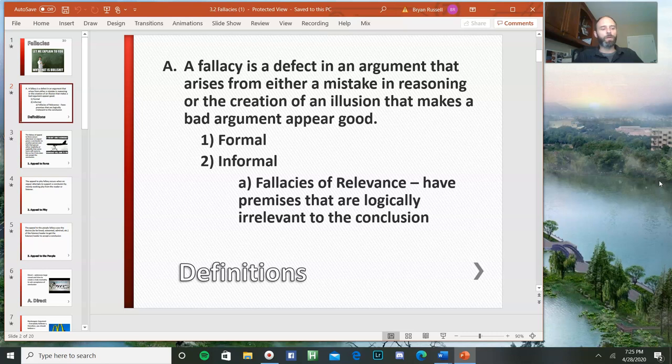So formal fallacies would be mistaken argument forms of the kind that appeared in chapter 7, chapter 6 and chapter 7. So if somebody affirmed the consequent, so if somebody said if A then B, B therefore A, that would be a formal fallacy. What we'll be talking about today are informal fallacies. So we're going back to inductive arguments. Informal fallacies are fallacies of relevance. They have premises that are logically irrelevant to the conclusion. So even if the premises are true, they wouldn't give adequate support to the conclusion.